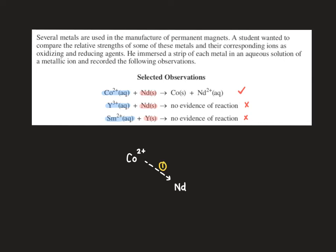Reaction 2 we see that neodymium is above yttrium because it's non-spontaneous; the OA is below the RA. So I'm just going to draw a little dashed line here and I know that yttrium 3 plus is somewhere beneath neodymium, and so reaction 2 tells me that.